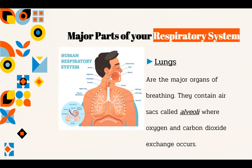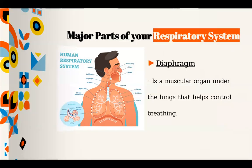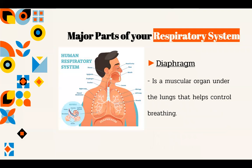The lungs are the major organs of breathing. They contain air sacs called alveoli, where oxygen and carbon dioxide exchange occurs. The diaphragm is a muscular organ under the lungs that helps control breathing.